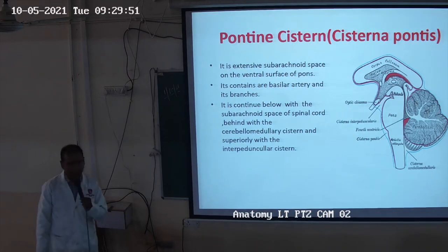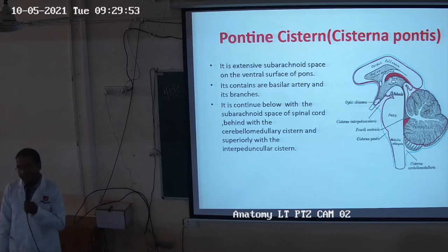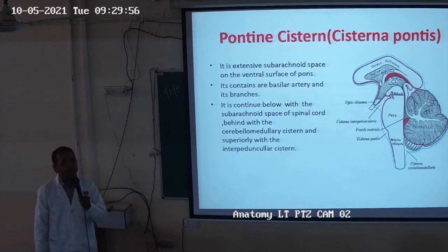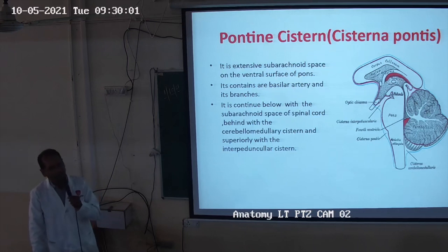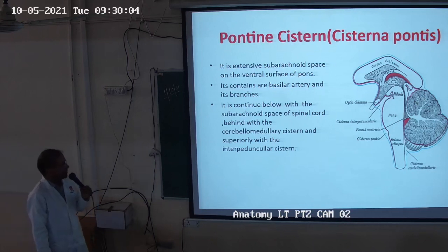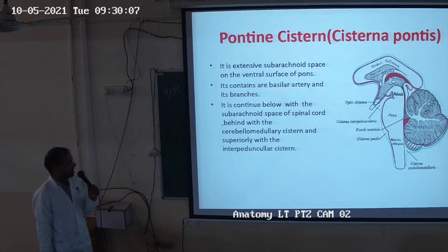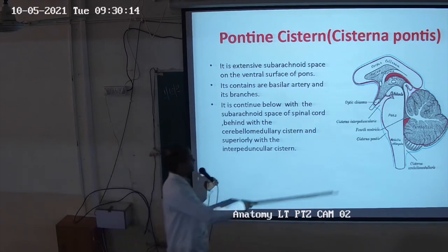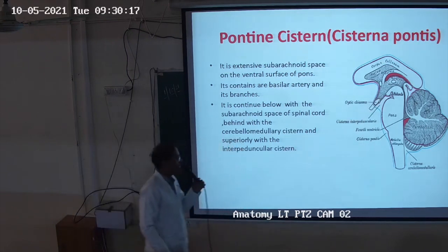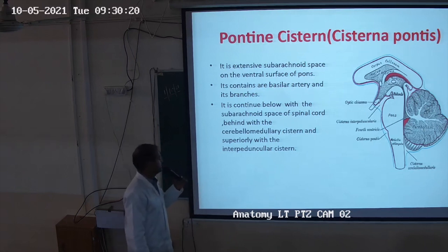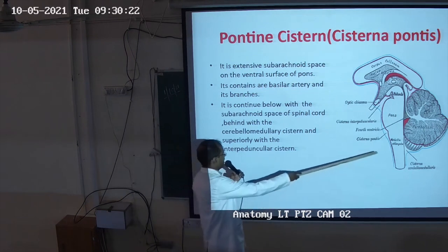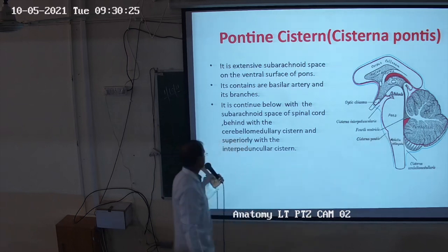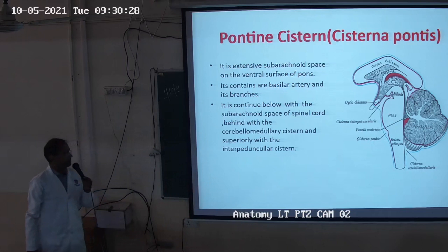The basilar artery is formed by the two vertebral arteries and runs along the base of the brain. The pontine cistern continues below with the subarachnoid space of the spinal cord, behind with the cerebellomedullary cistern, and superiorly with the interpeduncular cistern.